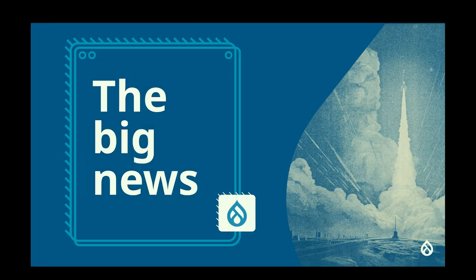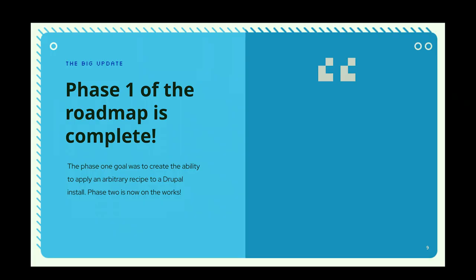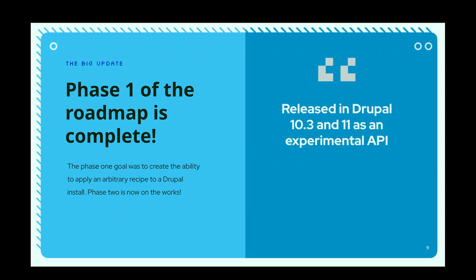The big news from a little bit earlier this year is that phase one of the recipe roadmap is complete. Phase one was really about saying, let's have a system where we can actually take these recipes and apply them to our site. That was released in Drupal 10.3. There were a few enhancements as part of Drupal 11. It is still officially an experimental API, and so we're going to continue to see lots of enhancements in the coming months for recipes.